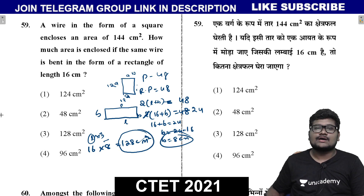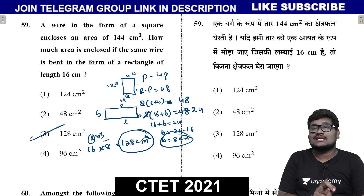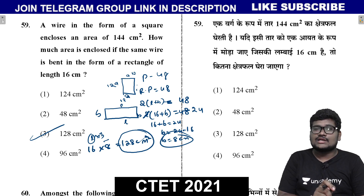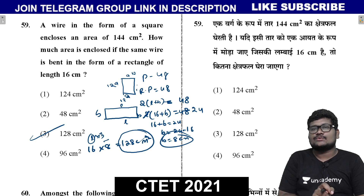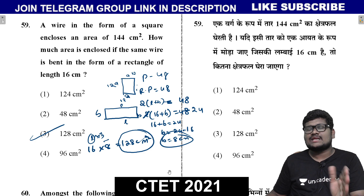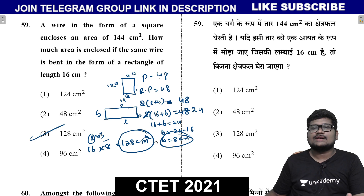The area of the rectangle is length × breadth = 16 × 8 = 128 cm². So 128 cm² is the correct answer.